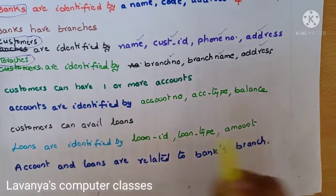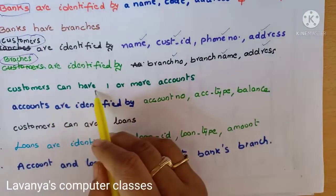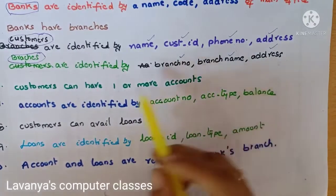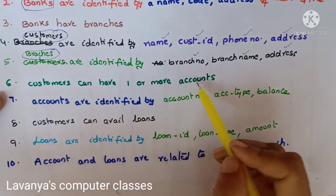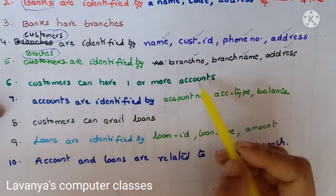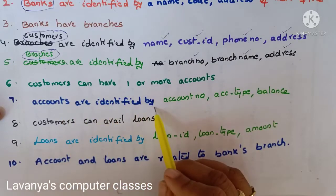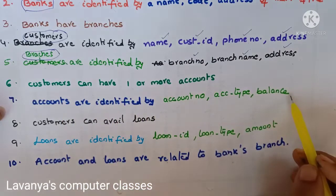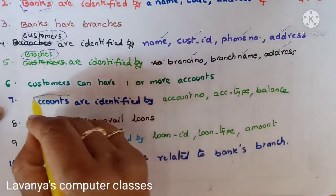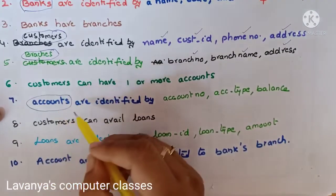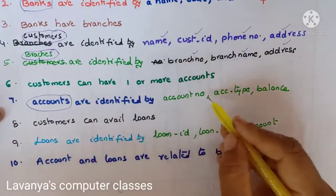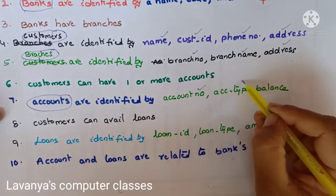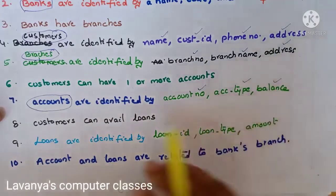Customers can have one or more accounts. In a bank, one customer can open any number of accounts. Accounts are identified by account number, account type, and balance. Here, one more entity set is coming — the name is accounts, with attributes: account number, account type, and balance.